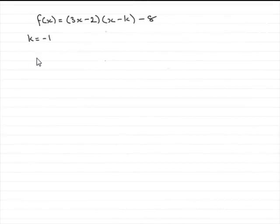Now, in this last part of the question, we're asked to factorize f of x completely. And in the previous part, we found that k was minus 1. So the first thing I want to do is substitute k as minus 1 into f of x.